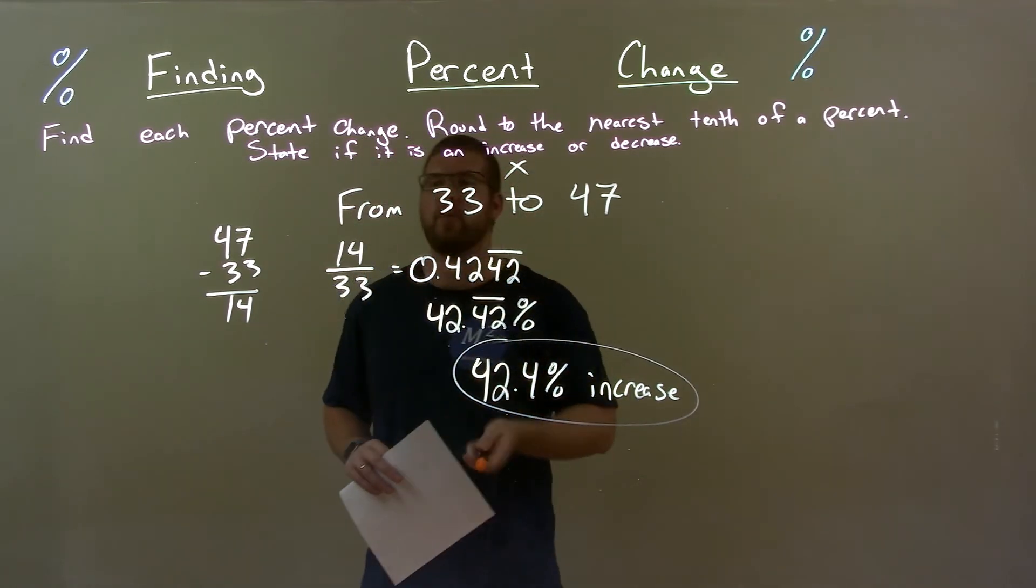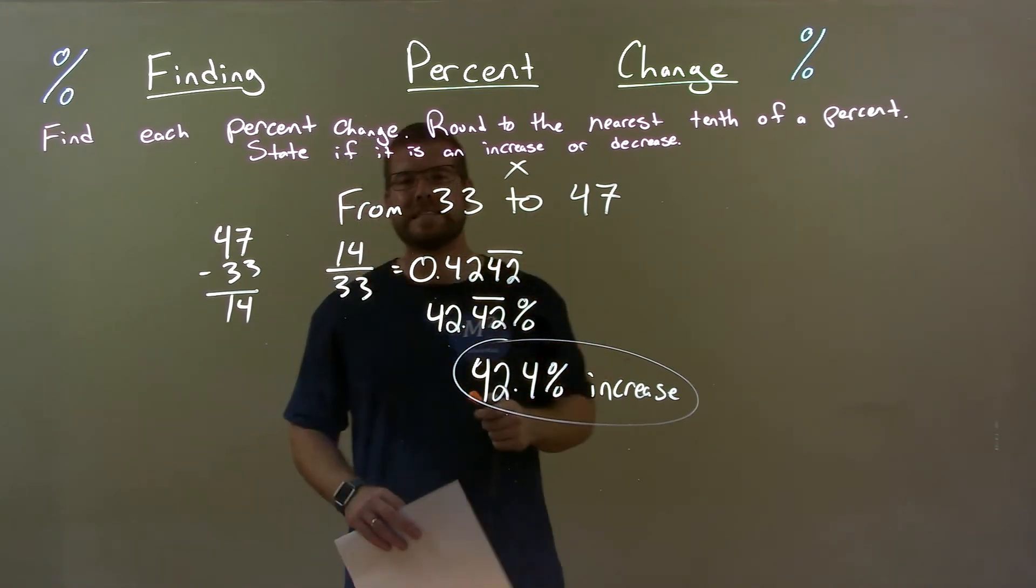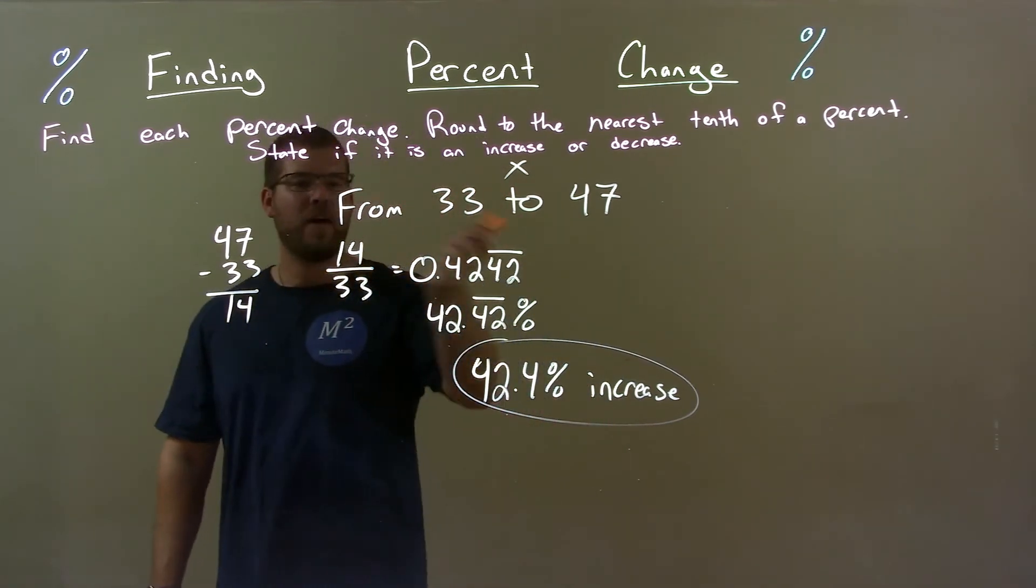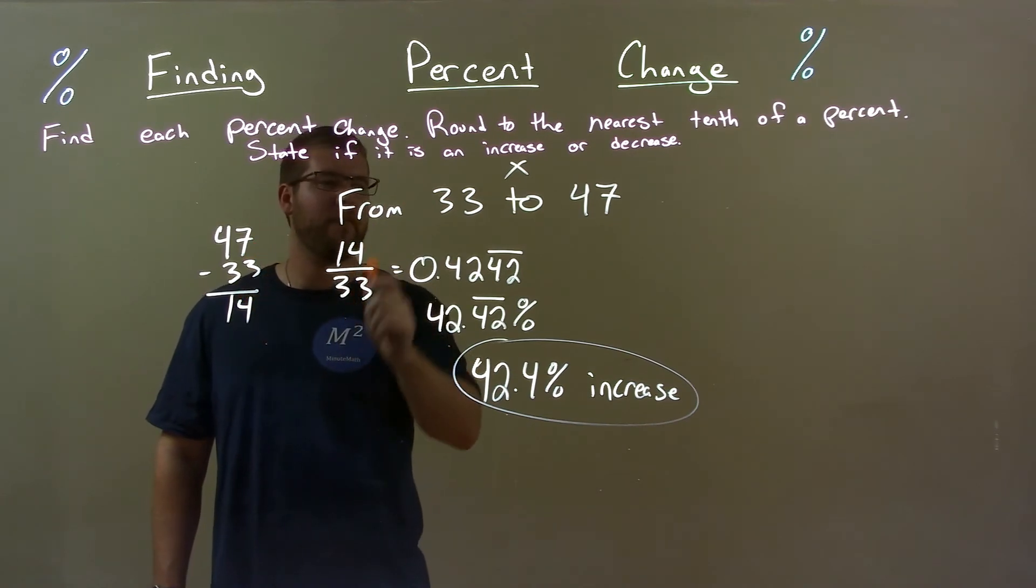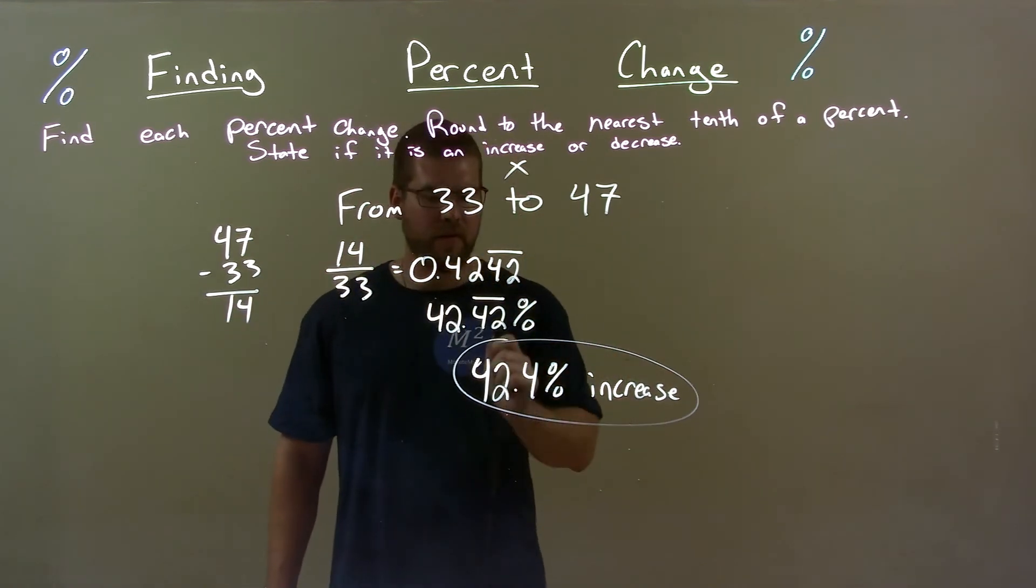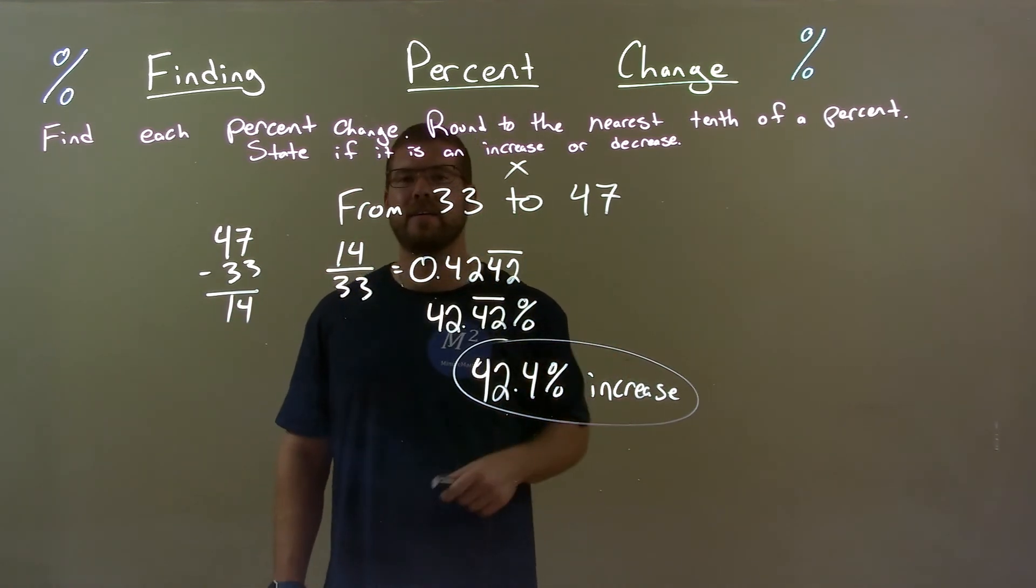So, quick recap. We're given from 33 to 47 and we have to find the percent change there. Found the difference between the two, divided that by the first number, converted that to a percent, then rounded it. We knew it was an increase. So again, final answer, 42.4 percent increase.